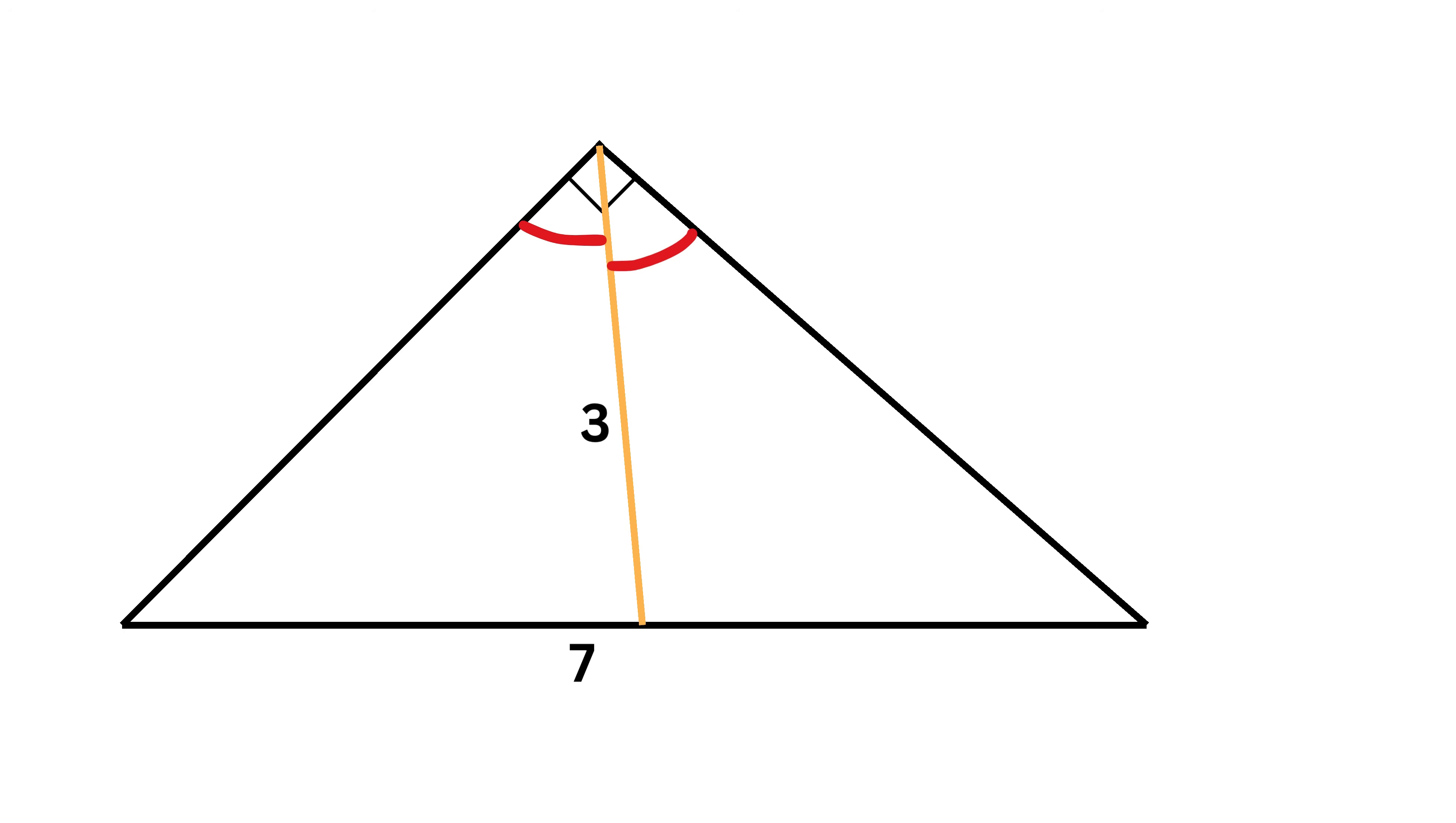Since this line is an angle bisector, both these angles will be the same and their values will be equal to 90 over 2 or 45 degrees. Now let us label the legs of this right triangle as A, which is this one, and B, this one. Now using the Pythagorean theorem, we can say that A squared plus B squared equals the hypotenuse squared, or 7 squared, or 49.